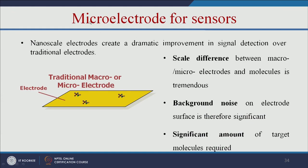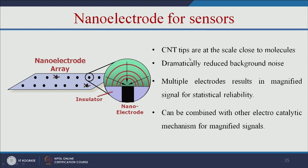Let us compare the microelectrode and nanoelectrode for sensor applications. In a microelectrode, the scale difference is very high because the molecule is in the nanoscale range while the electrode is in the microscale range, so background noise is very high and more target molecules are needed for detection. When using CNT-based nanoelectrodes for sensing, it reduces background noise because the nanotube matches the scale of the target molecule, resulting in high sensitivity.